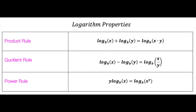The product rule tells us when we're adding logs with the same base, we can multiply the arguments inside the parentheses together. The quotient rule tells us when we are subtracting logs with the same base, we can actually divide the arguments inside the parentheses. And the last rule, the power rule, tells us when there's a number outside the argument on the left of our log, it can actually be brought into that argument as an exponent. Remember, these only work for logs that are the same base — if they're different, you have to convert them, which we're not going to get into today.